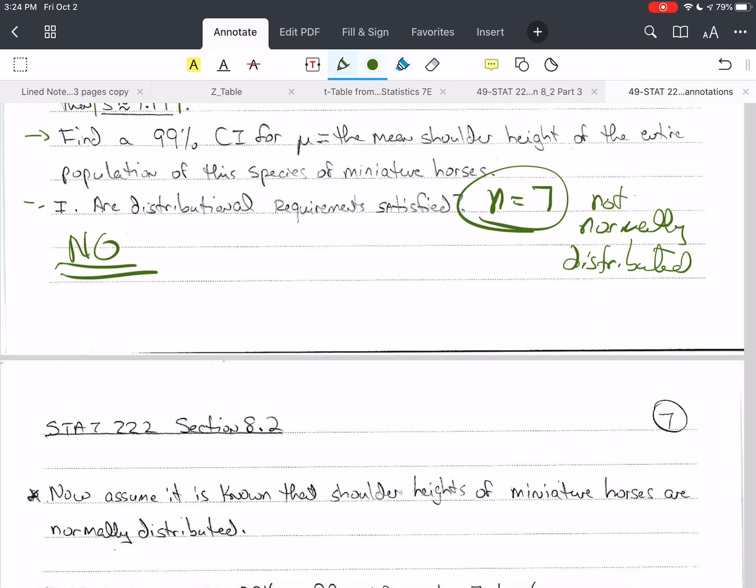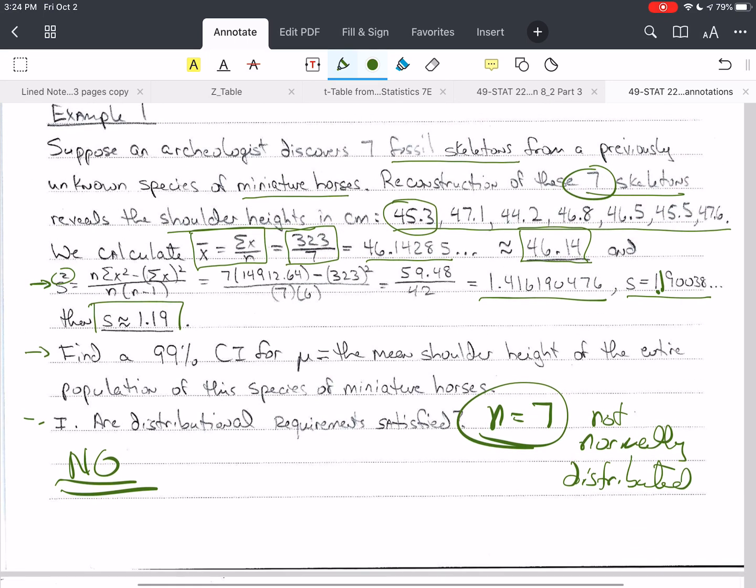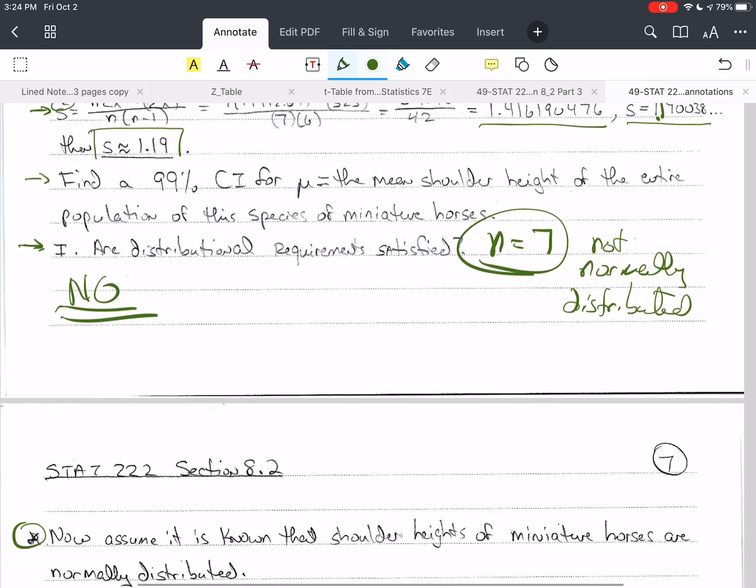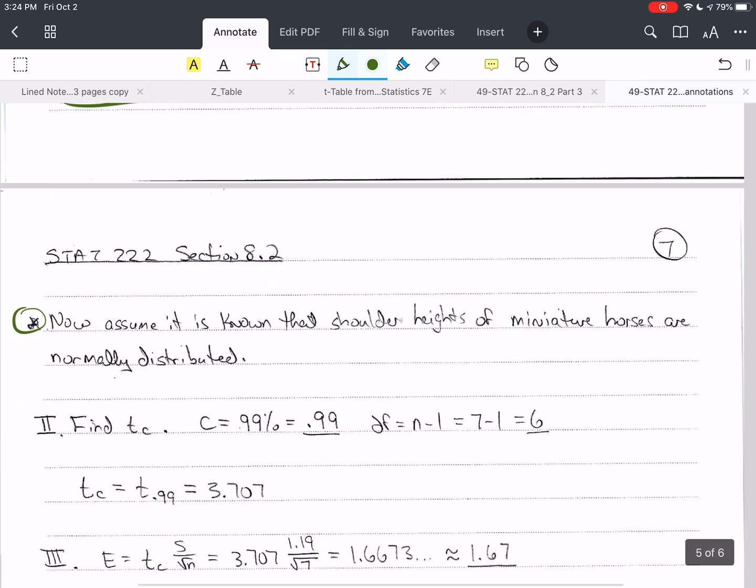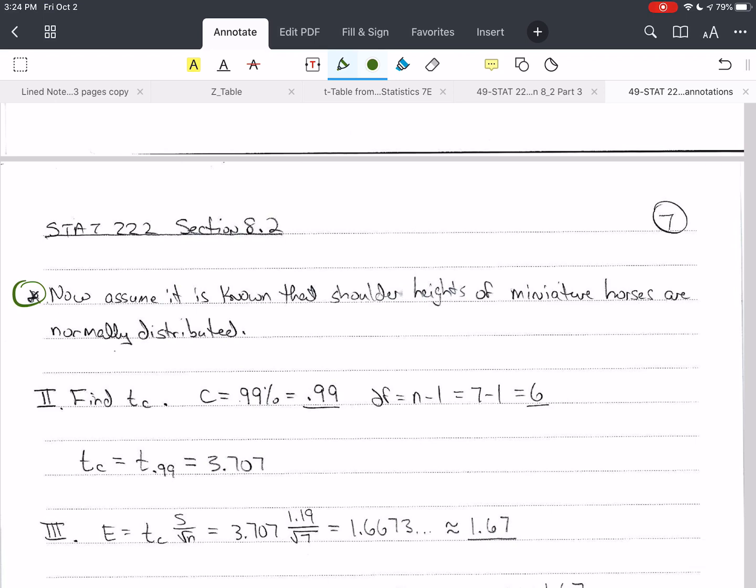Now, in order to do this problem, we're going to assume that it is known that the shoulder heights of miniature horses are normally distributed. If I assume this, now I can do the rest of the problem. But as the problem is written, I cannot do it. So in real life, I would not do this problem this way. But we're going to use the method that's in this section. We're going to pretend that we know that these are normally distributed and proceed.